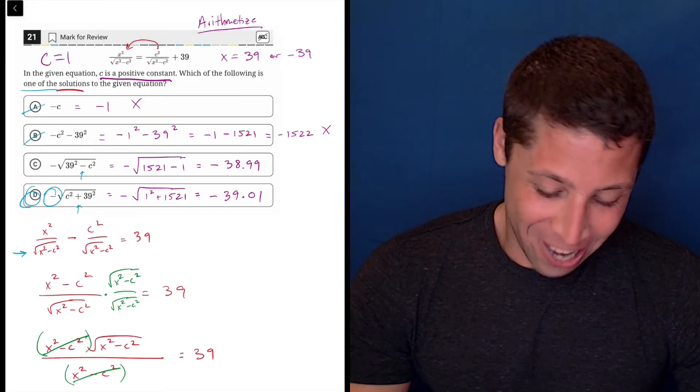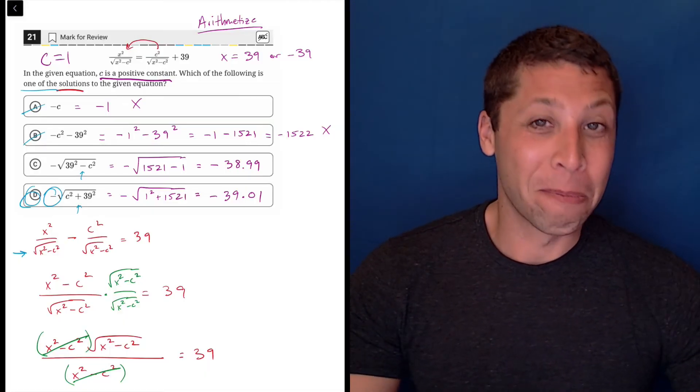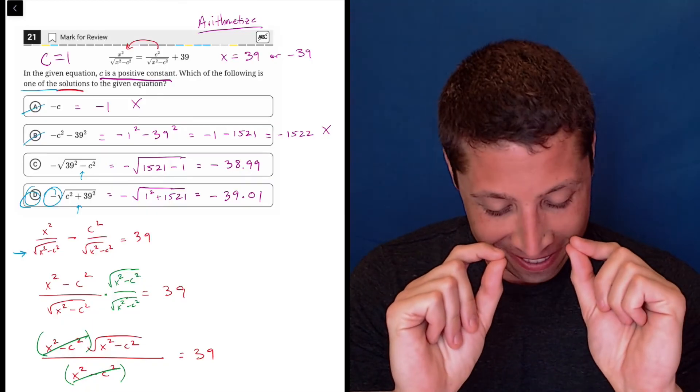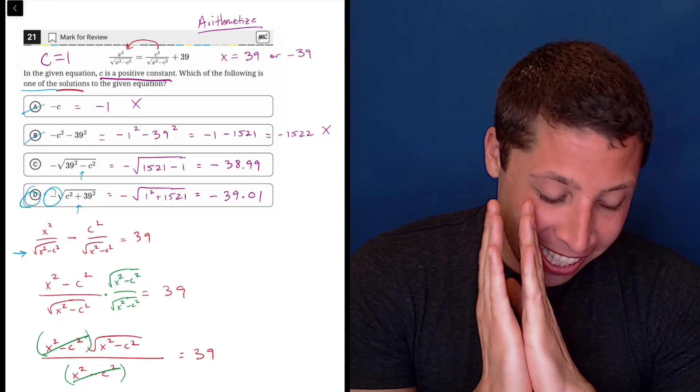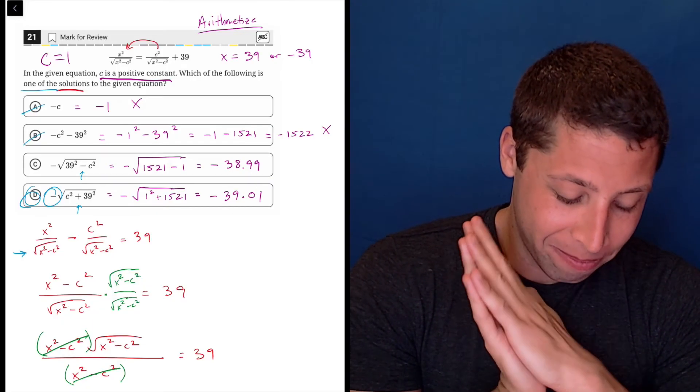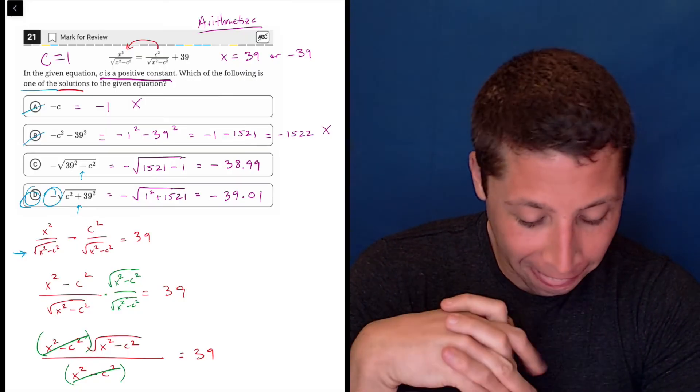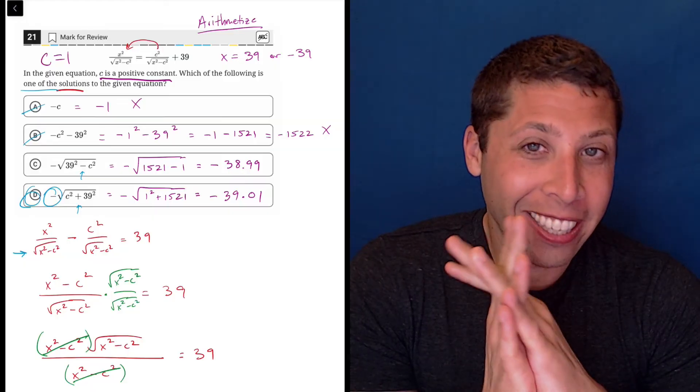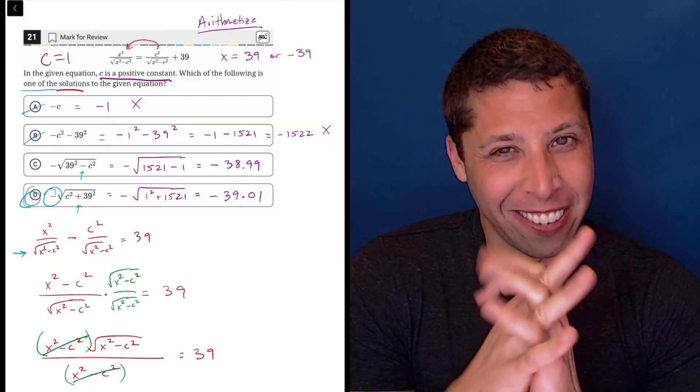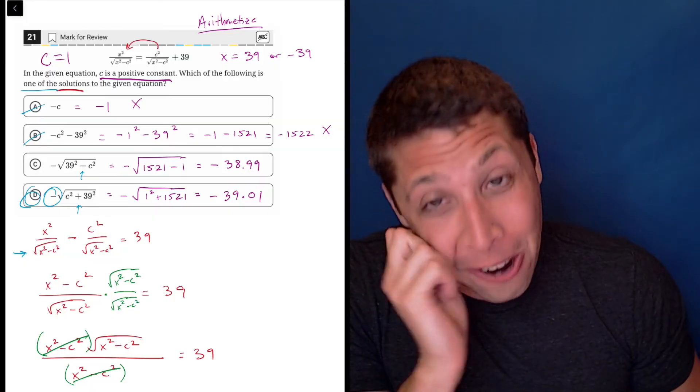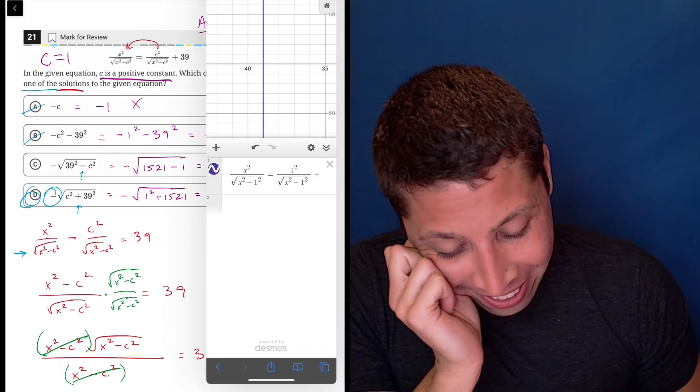So notice C and D are really, really close, but the difference is important, right? C is a little bit, I guess that's greater than negative 39, and D is a little bit less than negative 39, just a little.